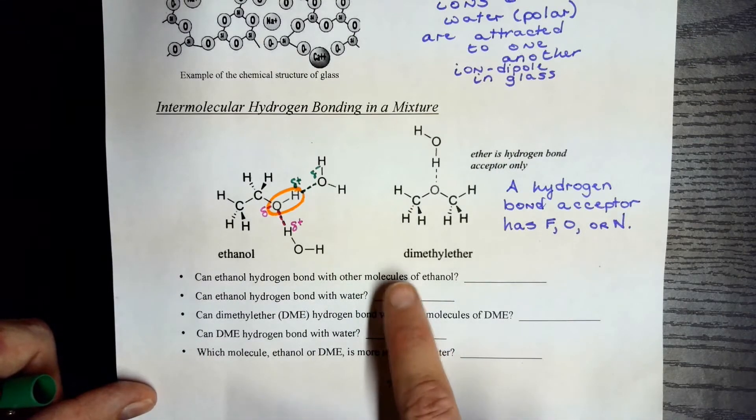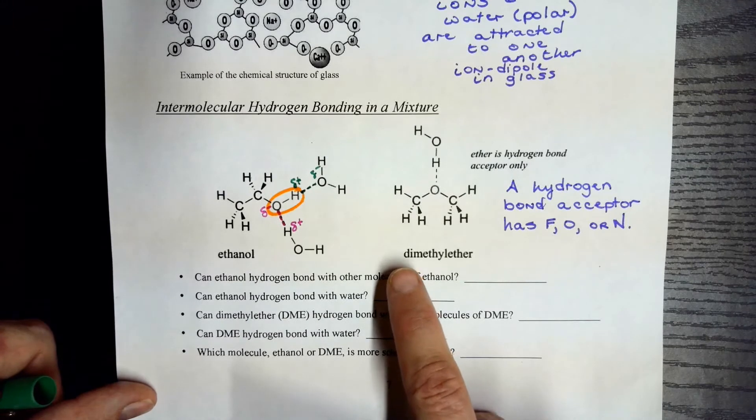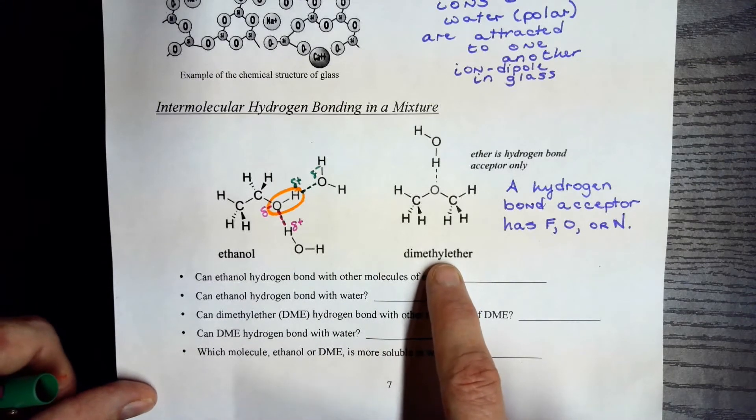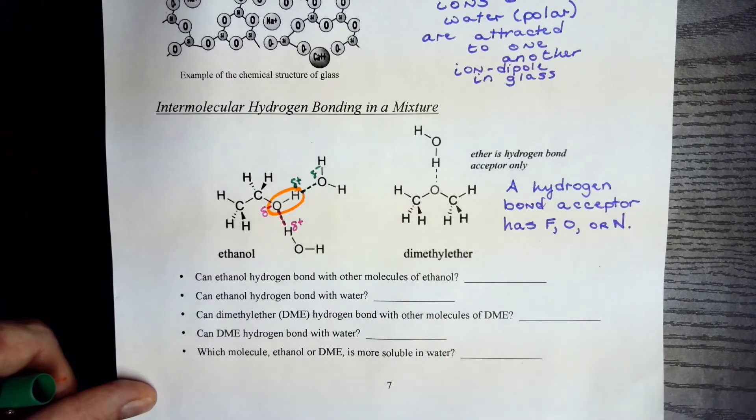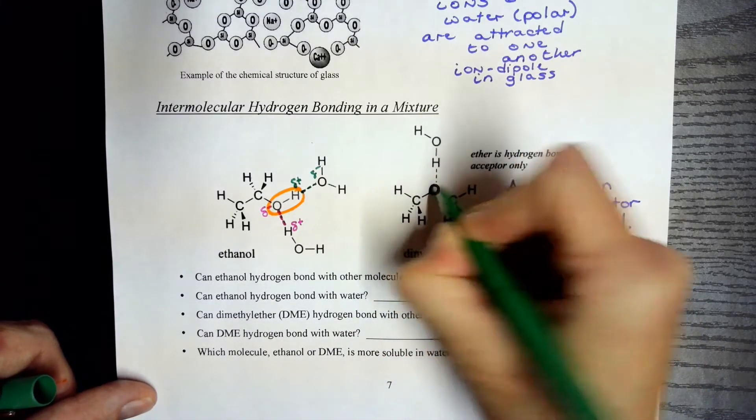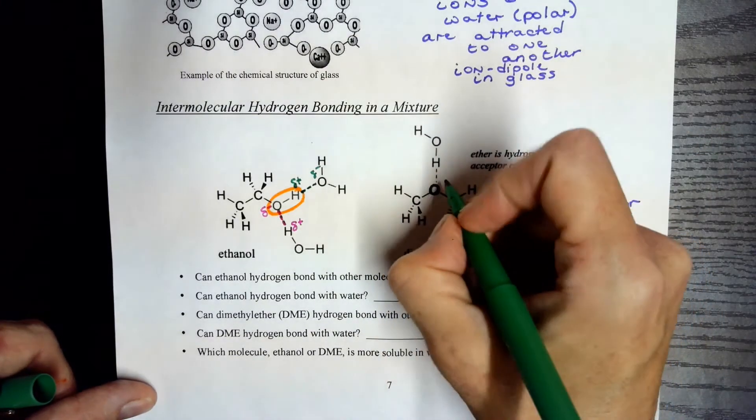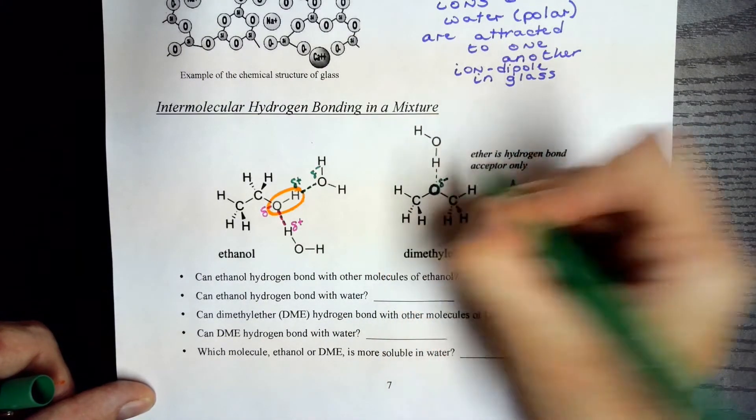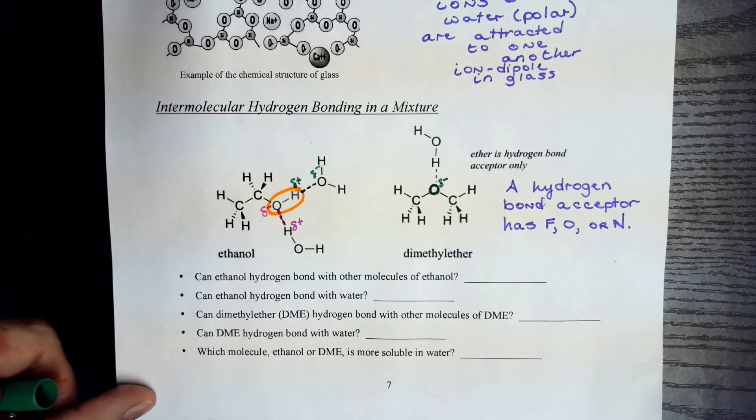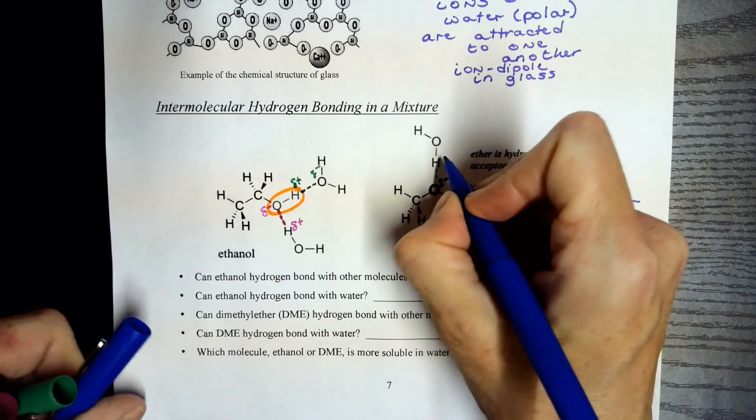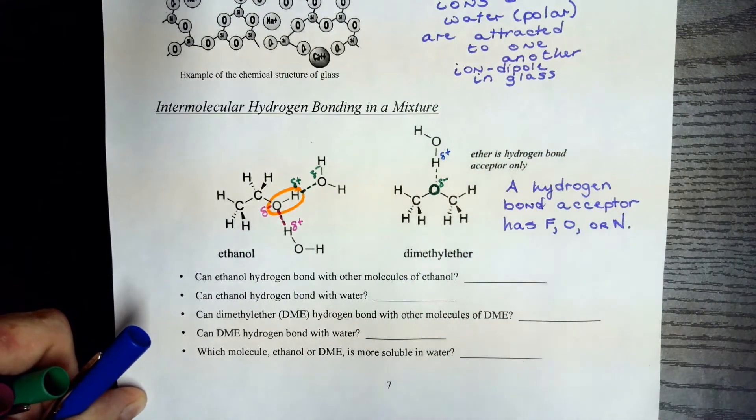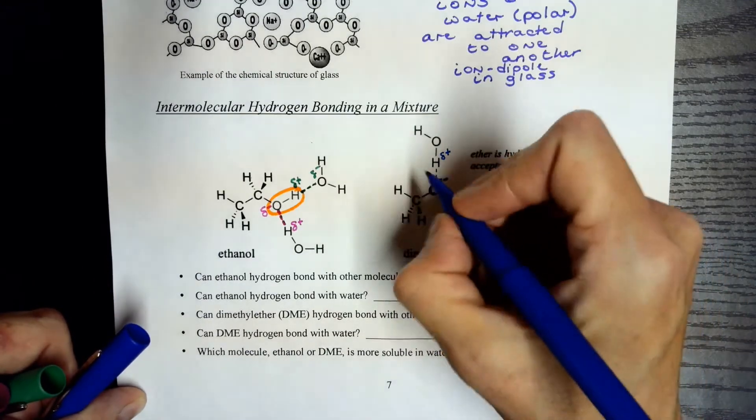We've seen other molecules in our discussions, such as dimethyl ether. Now dimethyl ether doesn't have hydrogen directly bonded to oxygen. However it does have this oxygen here, and that oxygen will have a partial negative charge. And if we add some water with the dimethyl ether, then the water can potentially hydrogen bond with the dimethyl ether.